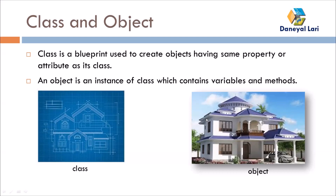By the help of this blueprint we create objects. In the same way, we can say the blueprint is the class and the building that is in existence is the object. The existence is of the object, not the class. But the class is required to create objects. Another benefit: if you want to create another building of the same type, you don't need a new blueprint — you already have one, so you can create multiple objects from a single class.